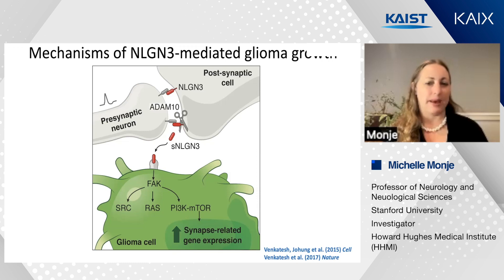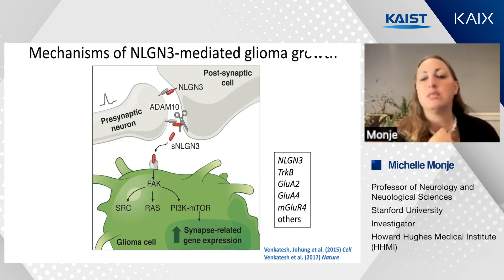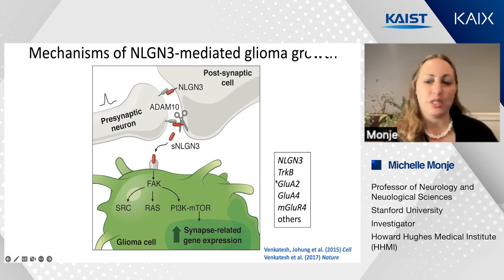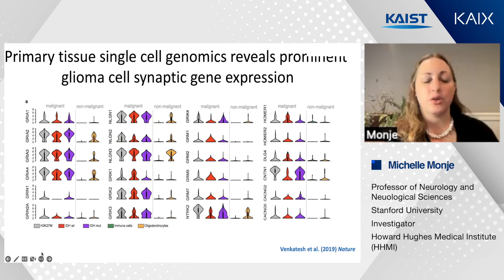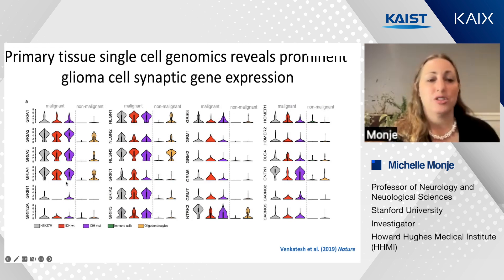But this actually doesn't explain the really unexpected dependency. When we looked at gene expression changes attributable to neuroligin-3 binding, we found unexpectedly that when neuroligin-3 binds to the glioma cell, it upregulates a number of synapse-associated genes—there's a feed-forward effect of neuroligin-3 on its own expression in the glioma cell, together with upregulation of the BDNF receptor TrkB, a number of glutamate receptor subunits, and other synapse-associated structural proteins. When we examine primary biopsy samples from major classes of high-grade glioma—H3K27M-mutant diffuse midline glioma, IDH wild-type hemispheric glioma, and IDH-mutant hemispheric glioma—we do indeed see in the malignant cells robust expression of AMPA receptor subunits, the neuroligins, and other synapse-associated structural proteins.